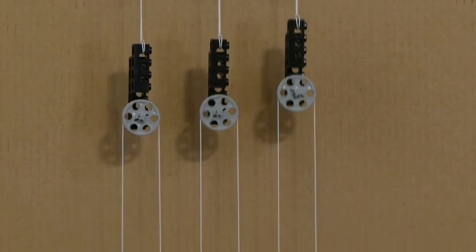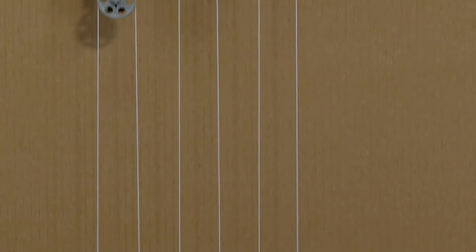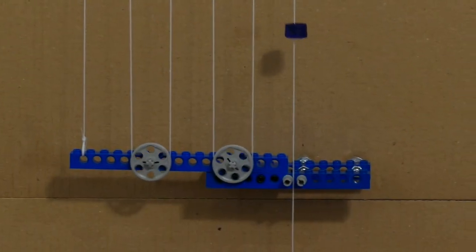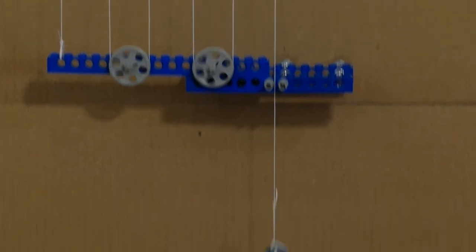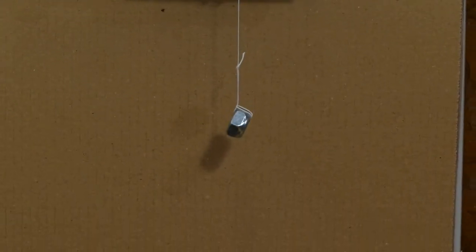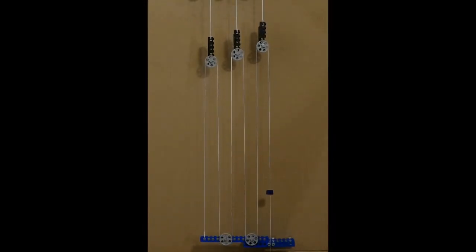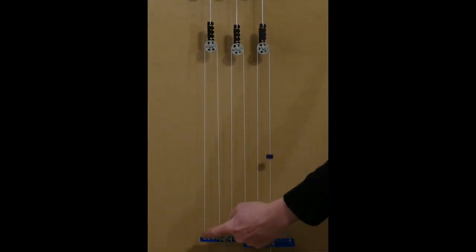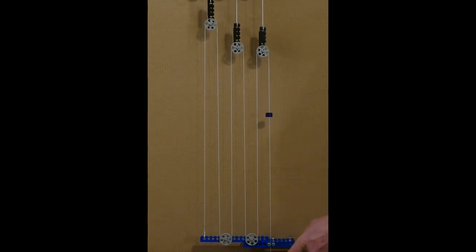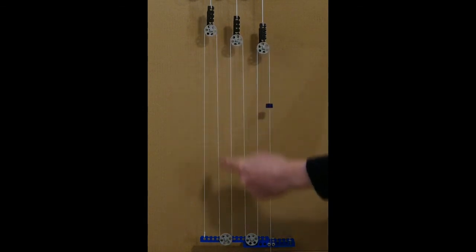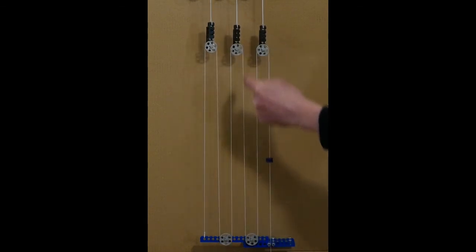And if we carry on going down we come to a set of fixed gears and the free end of the cord that you can see is attached to a weight at the bottom. The cord is fixed at one end and it's free at the other end with the weight hanging off it out of shot and it passes up around the movable pulleys and the fixed pulleys along the way.